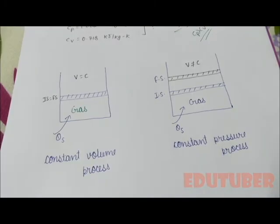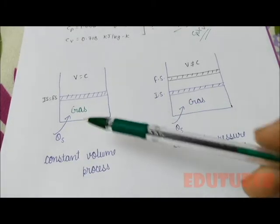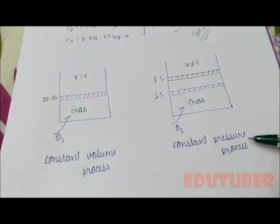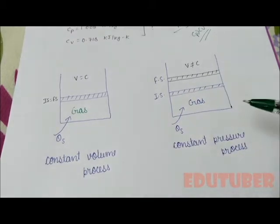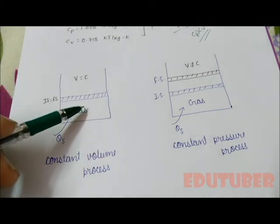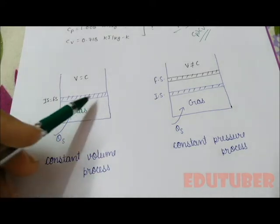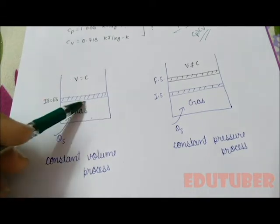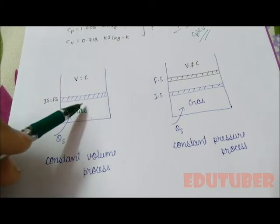You can see here I have drawn two diagrams. One is for constant volume process, another is for constant pressure process. In constant volume process, volume of the system remains constant. This means this is a rigid piston; it cannot move up and down, and gas which is filled in this area will only remain in this area if we supply heat to it.